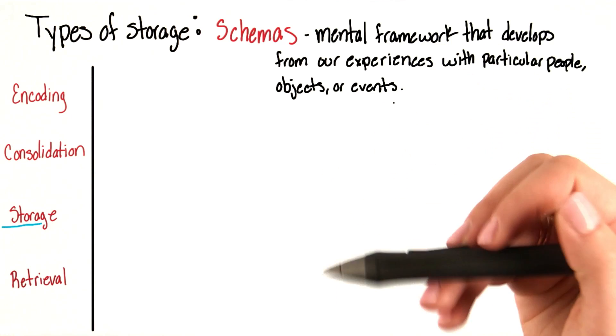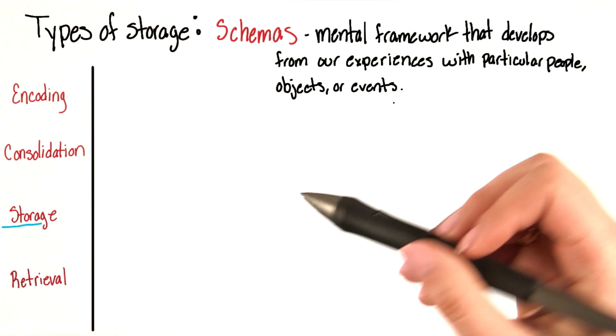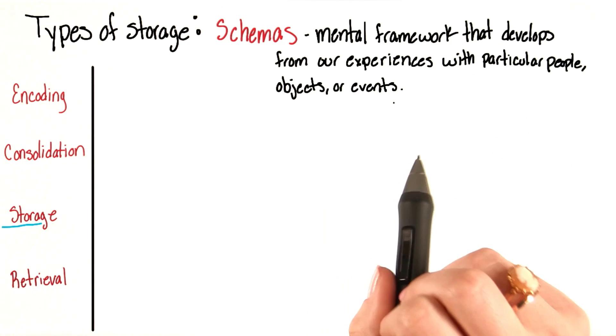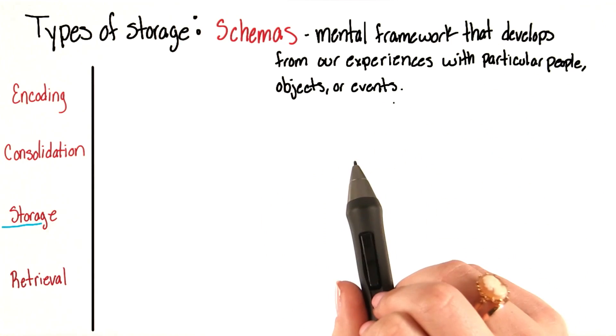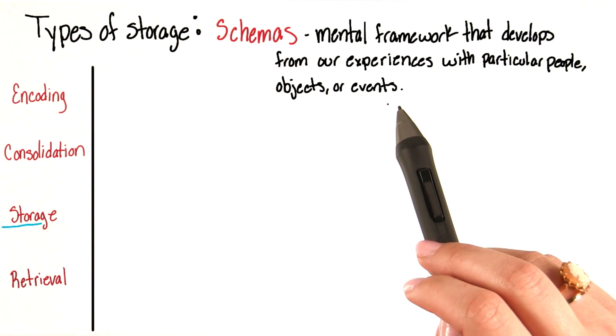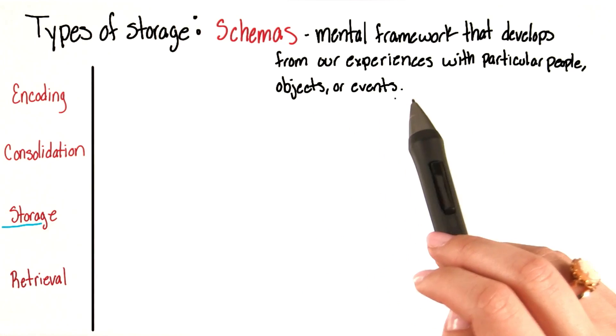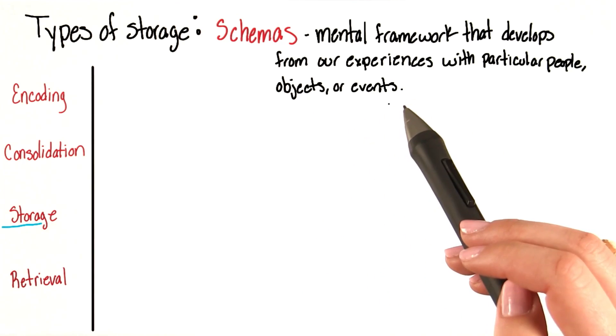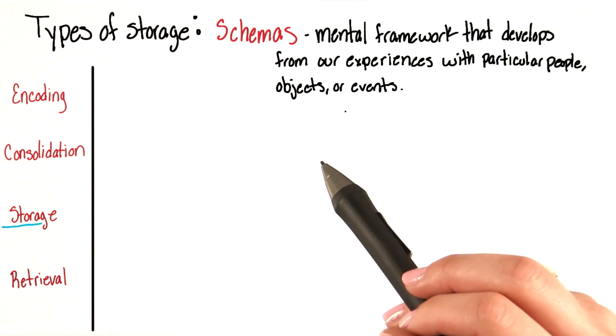That is, you can think of schemas as a framework for representing some aspects of the world that tells us how people, objects, or events are most likely to look like or act like.